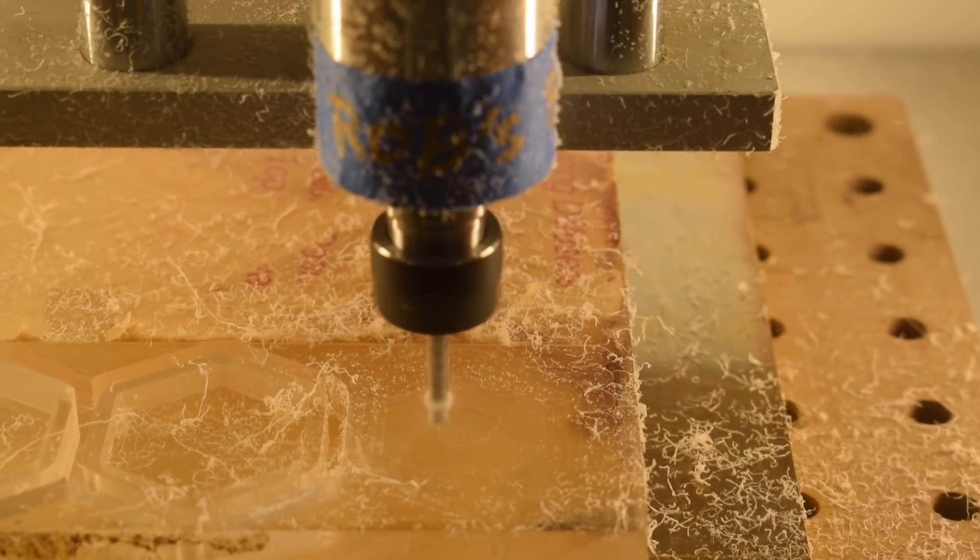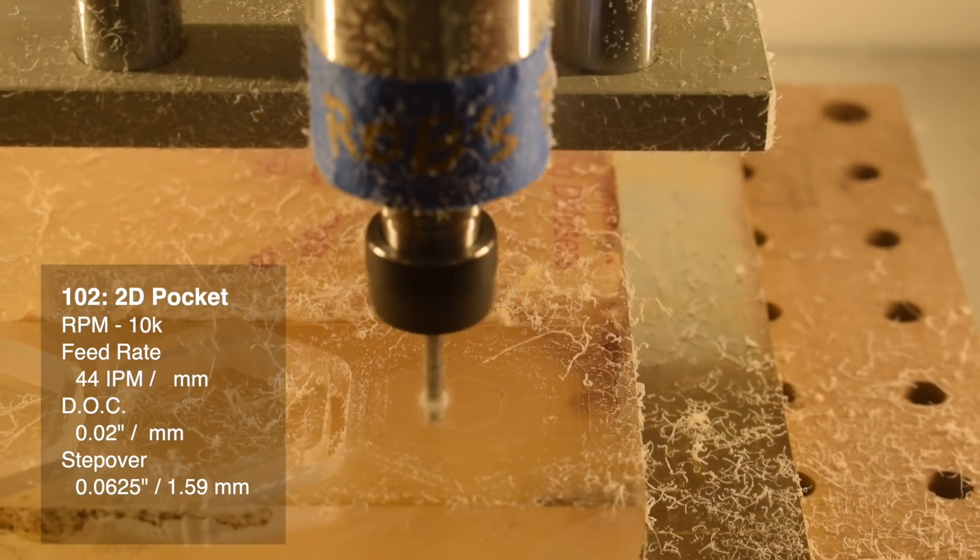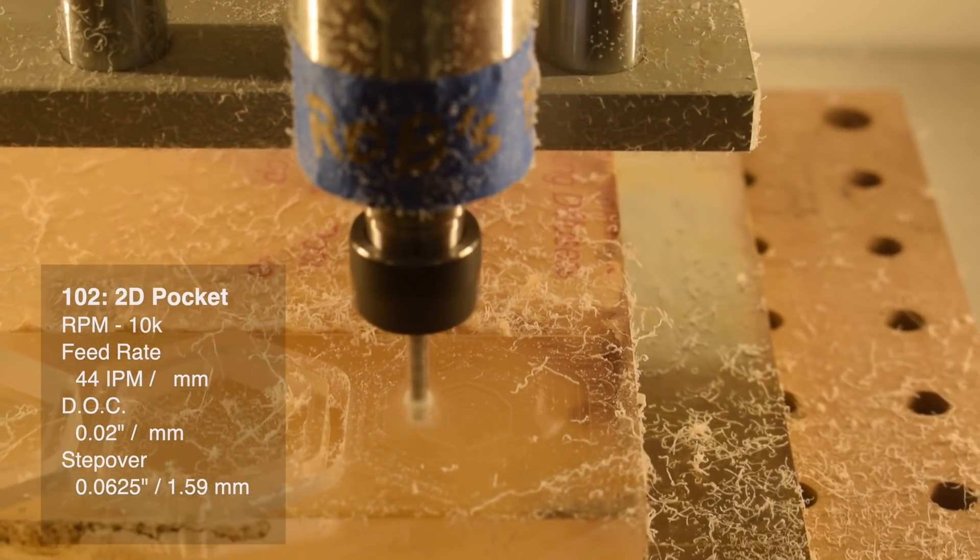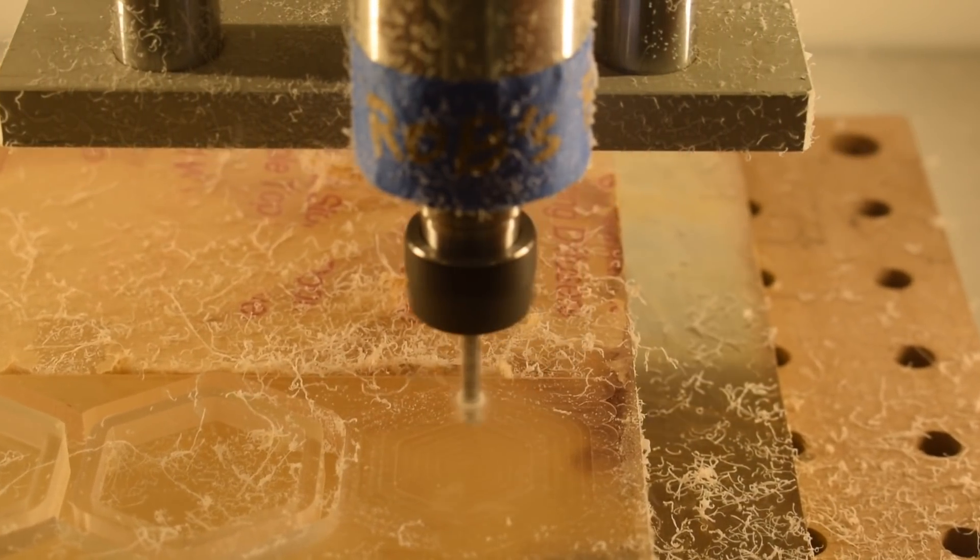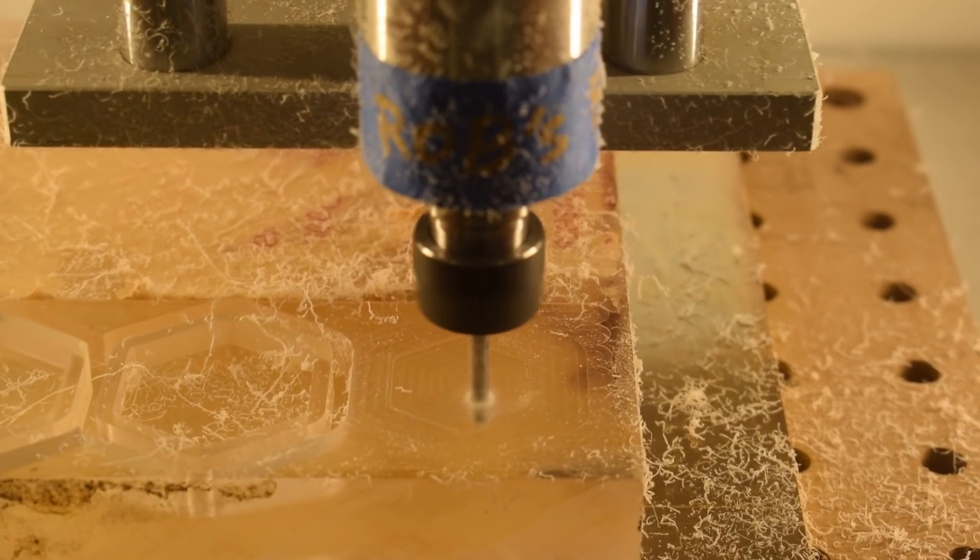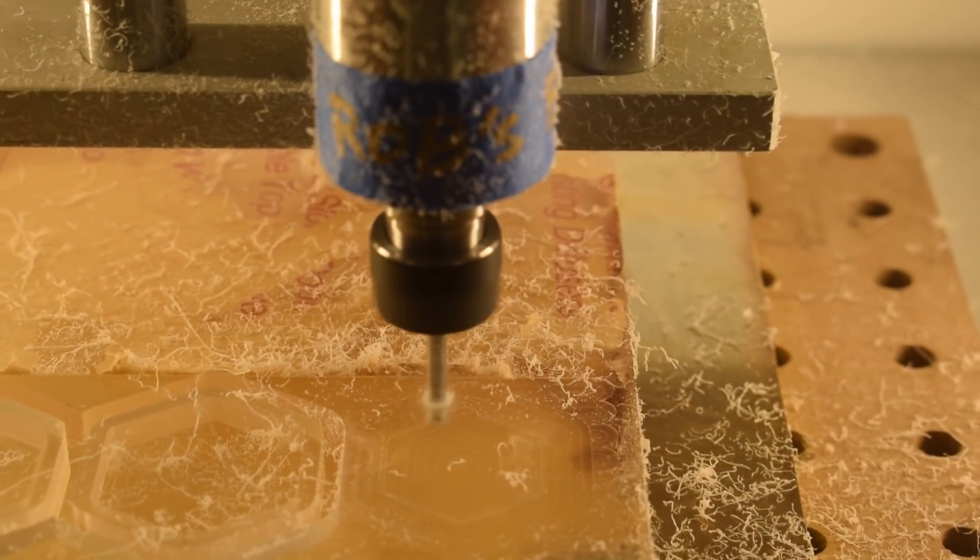First up is pocketing. 10,000 RPM, 44 inches per minute, a 0.02 inch depth of cut, 50% step over. This is almost identical to the guidelines we had in our old charts, and it works primarily because we're keeping a really healthy chip load of just over 2 thou per tooth.